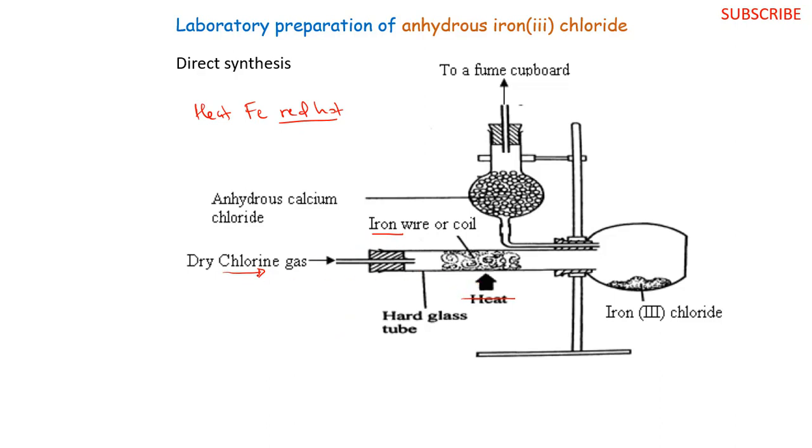And the reaction will proceed as we shall see according to the equation. Once it's red hot and we pass our dry chlorine, once the reaction starts, even if we stop heating, the reaction will continue until the end product. At that point, we shall form our iron chloride as per the equation. The heated iron, which is red hot iron, together with our dry chlorine, will form our iron chloride.